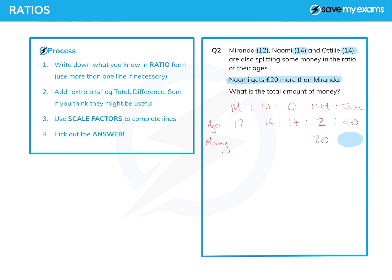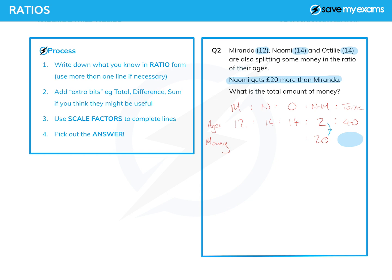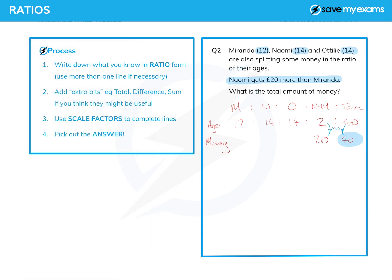Now we have two things in the same column, so we can use scale factors. What do I multiply 2 by to get 20? It's 20 over 2, which is 10. So the scale factor is 10. I just need to multiply the total by 10: 40 times 10 is 400. So the total money is 400 pounds. If I wanted to find how much each of them got, I'd multiply 12, 14, and 14 by 10, but that's not required here.